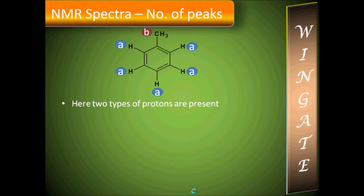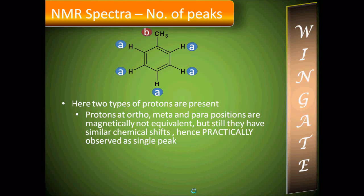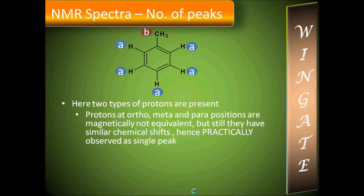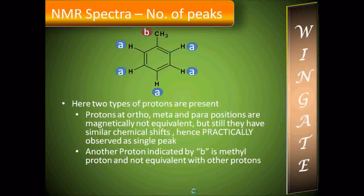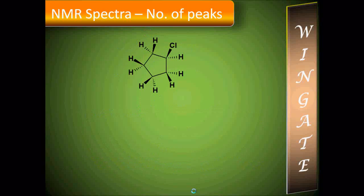Now let us take a simple alkyl benzene — toluene. The ortho, meta, and para ring protons are magnetically non-equivalent, but their chemical shifts are very similar, so they are practically observed as a single signal indicated by A. The benzylic proton indicated by B gives another NMR signal. Therefore the total number of NMR signals possible is 2.